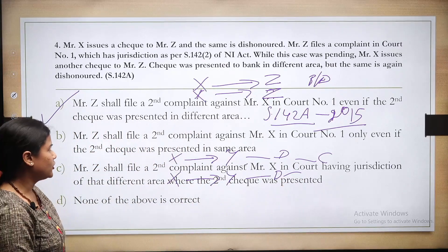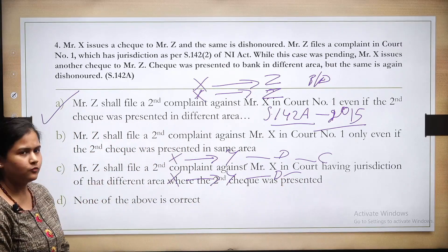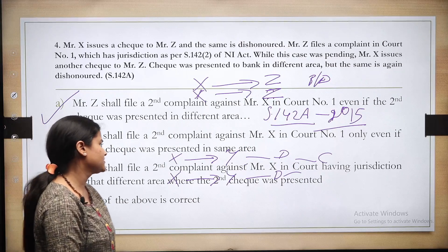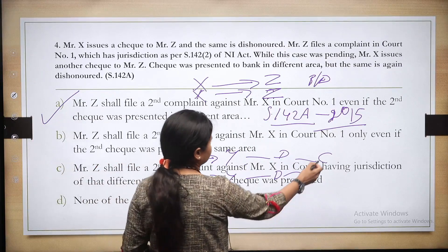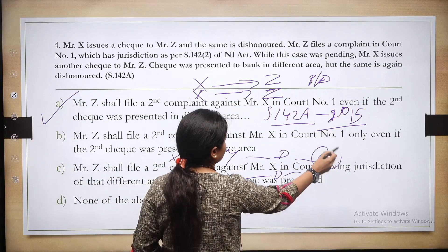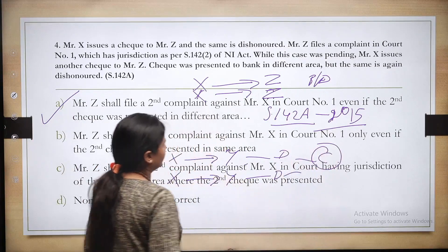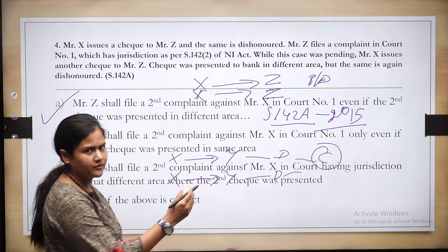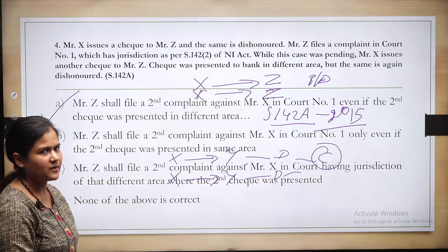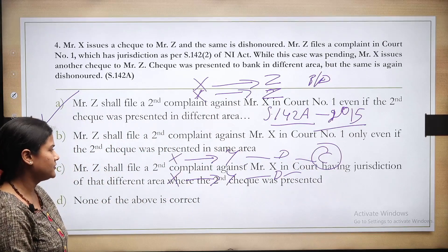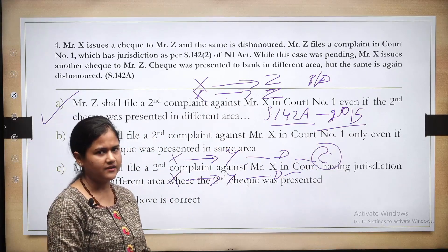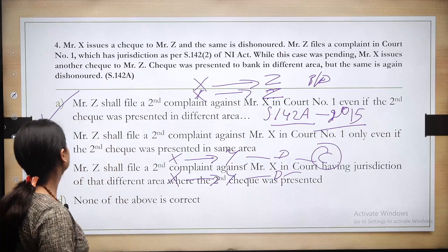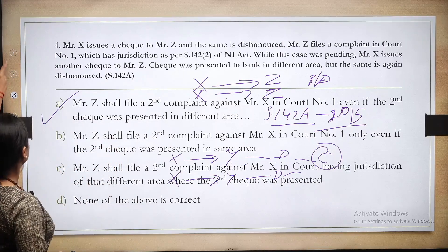According to section 142 of the NI Act, the complaint will be filed in the same court in which the first check case is pending, and not in a different court — despite the fact that the second check was presented in a different area.